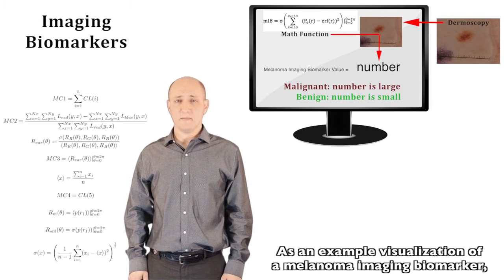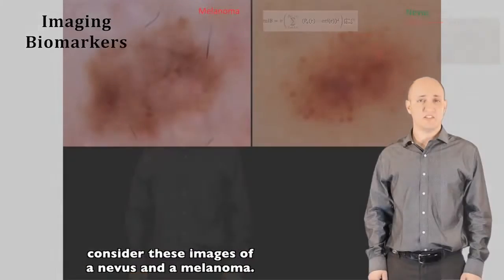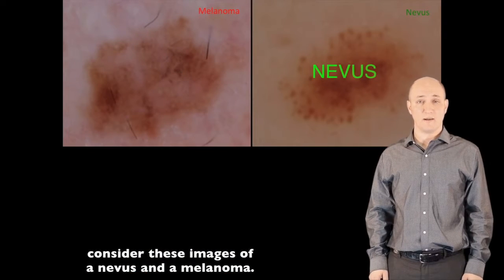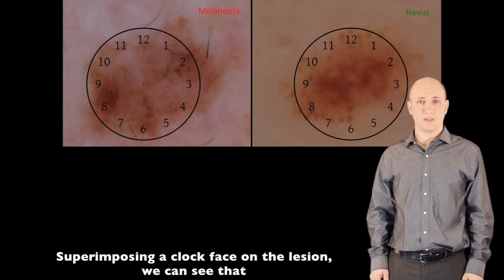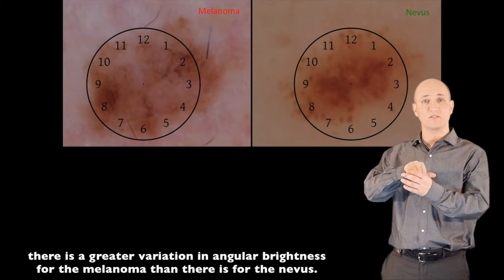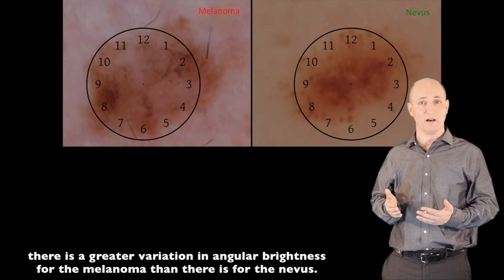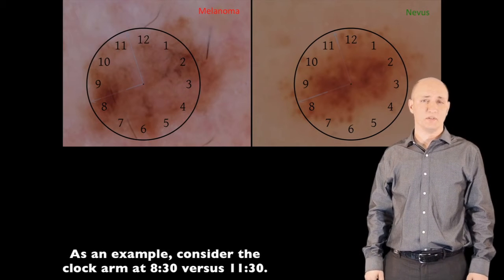As an example visualization of a melanoma imaging biomarker, consider these images of a nevus and a melanoma. Superimposing a clock face on the lesion, we can see that there is a greater variation in angular brightness for the melanoma than there is for the nevus.